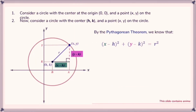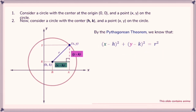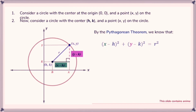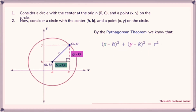Starting here, this is an explanation of how the circle's equation came to be. If you have a circle with its center at the origin and a point (x, y) on the circle, and then consider a circle with its center at (h, k) and a point (x, y) on the circle, by the Pythagorean theorem we get this equation. This video's focus is not the proof of this equation but more so how to apply it.